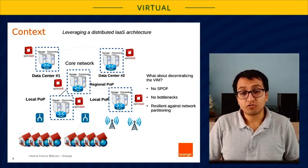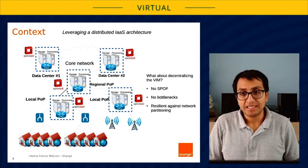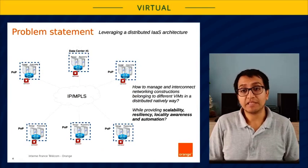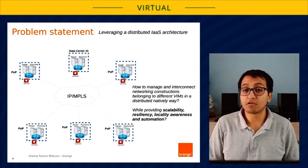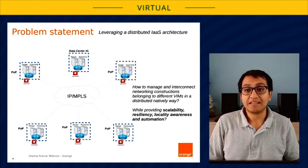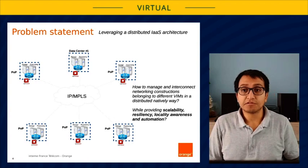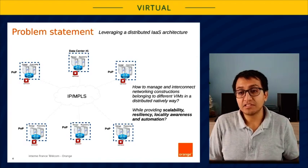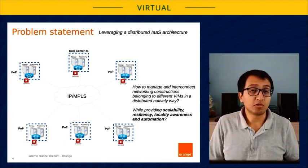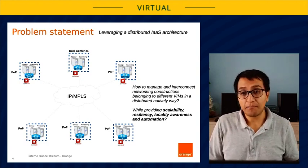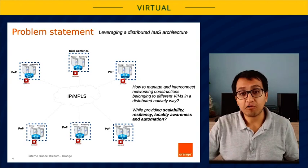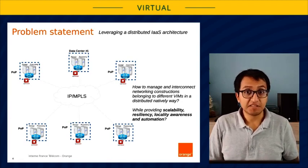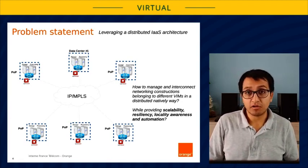But even if this approach could better fit the requirements and constraints, it raises several questions from a management point of view. We focus especially in how to manage and interconnect networking constructions belonging to several independent VIMs in a distributed natively way. Software stacks like OpenStack have been considered to work in a pretty stand-alone way, managing a single deployment. So we need a solution capable to control both intra- and inter-PoP infrastructure connectivity. And of course, we need this connectivity solution to be provided while guaranteeing the scalability, resiliency, locality awareness, and automation of the entire system.